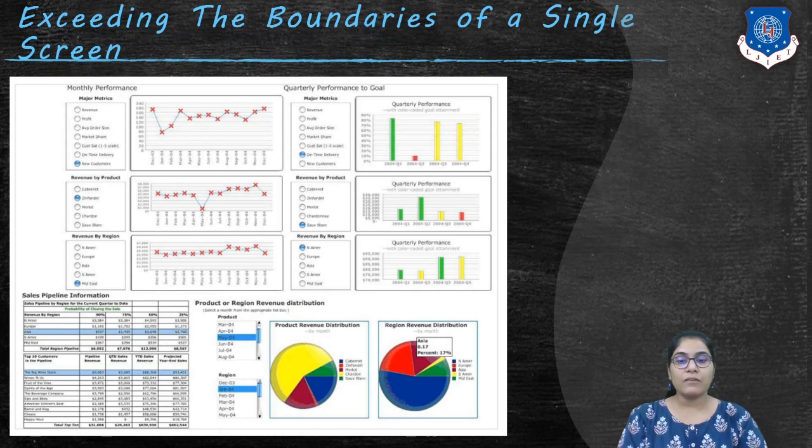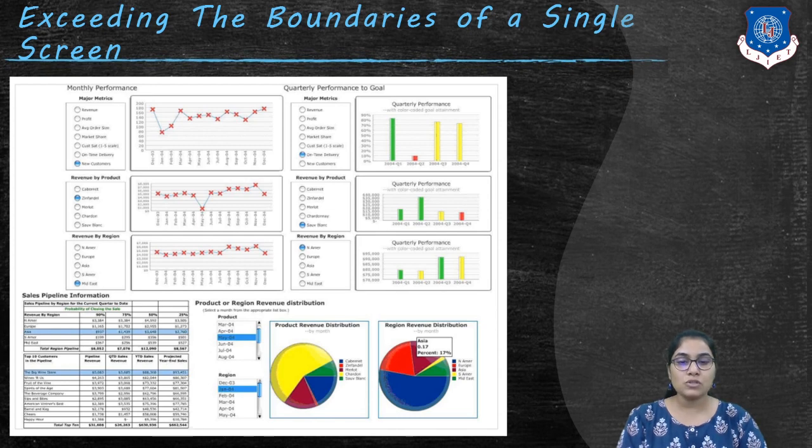Something powerful happens when information is seen together at the same time. Not only does this provide convenience for viewers and save valuable time, but it also paints a complete picture that can bring to light important connections that might not be visible otherwise. Something critical is sacrificed when the viewer must lose sight of some data in order to scroll down or over or move from screen to screen to see the rest.